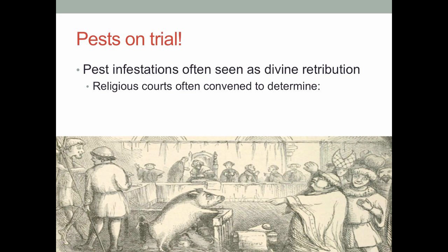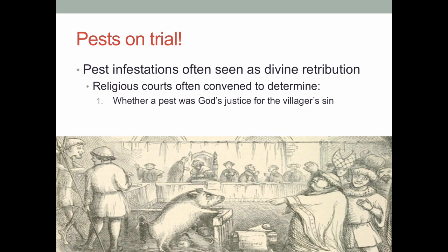The basic idea was that pest infestations were viewed as divine retribution, and the Catholic Church operated as a pseudo-government with a whole court system. So essentially, pests were religious in nature and they could be tried in a religious court. Pests could fall under two major categories: either they are God's justice for a village's sins — in which case you had to repent, pray, fast, and ask for God's forgiveness — or they are the devil's minions unjustly punishing you, in which case you need to punish the pests. Sometimes this was excommunicating the pests so they couldn't be part of the church anymore, banishing them so they had to leave the land, or relocating them. There were lots of solutions.